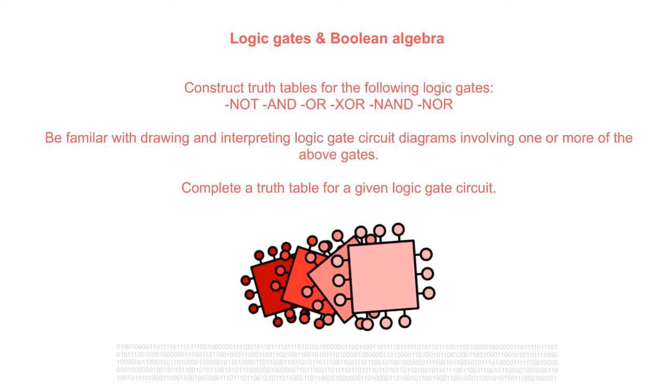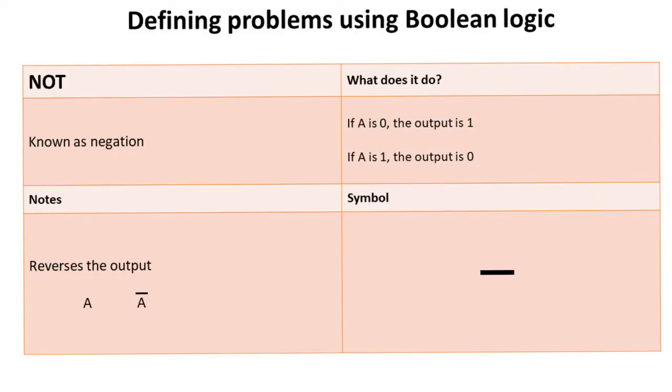We're going to become familiar with drawing and interpreting logic gate circuit diagrams involving one or more of these gates, and look at how you can complete a truth table for a given logic gate circuit. Before we dive into that, it's important we spend some time defining problems using Boolean logic and getting to know the various symbols and terminology.